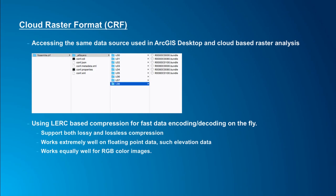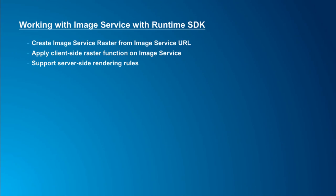In Update 1, you'll be able to create a new image service raster object directly from a service URL. We support rendering rules predefined on the server side, so you can take advantage of those predefined rendering rules. Since this is a raster object, you'll also be able to use raster functions or raster function templates and use image service raster as an input to a raster function chain.